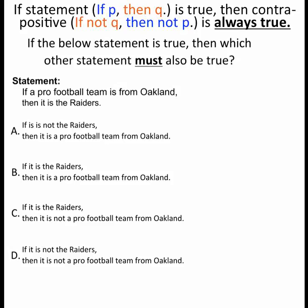The given statement is: if a pro football team is from Oakland — that's the P part — then it is the Raiders — that's Q. Now we can go through all of the answer choices.